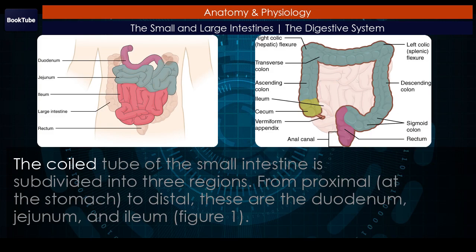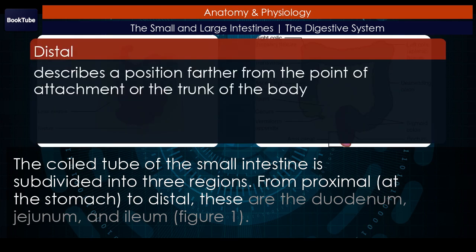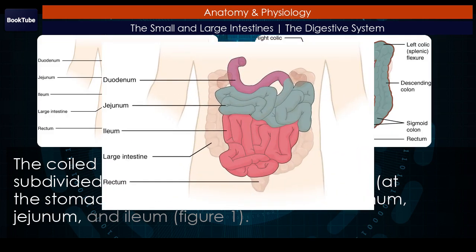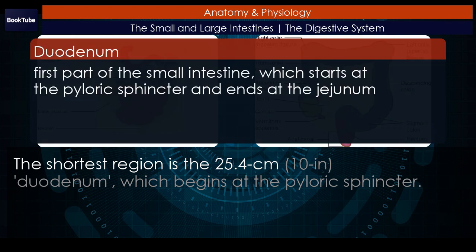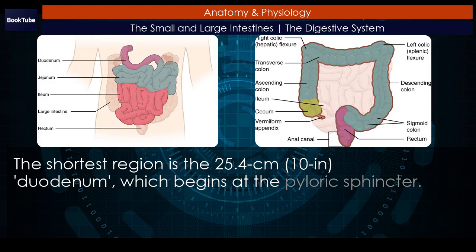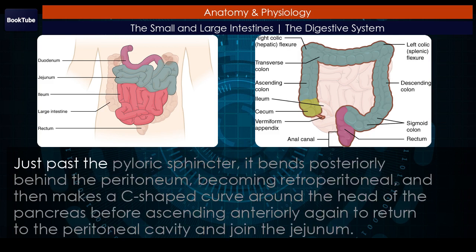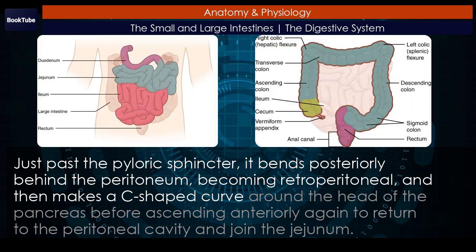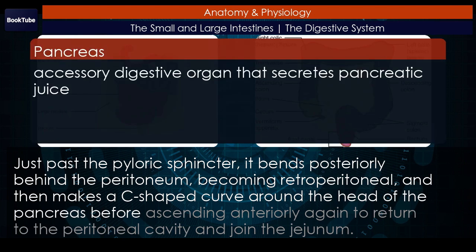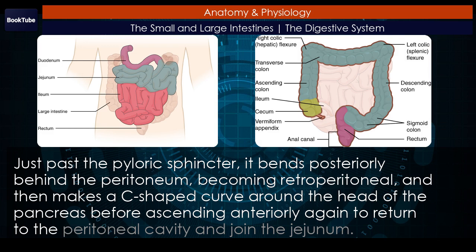Structure. The coiled tube of the small intestine is subdivided into three regions — from proximal at the stomach to distal. These are the duodenum, jejunum, and ileum. The shortest region is the 25.4 centimeters (10 inch) duodenum, which begins at the pyloric sphincter. Just past the pyloric sphincter, it bends posteriorly behind the peritoneum, becoming retroperitoneal, and then makes a C-shaped curve around the head of the pancreas before ascending anteriorly again to return to the peritoneal cavity and join the jejunum.